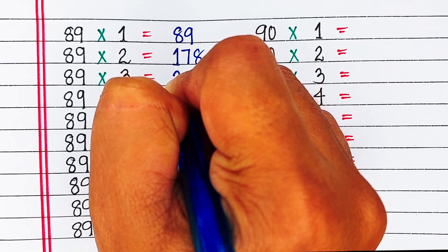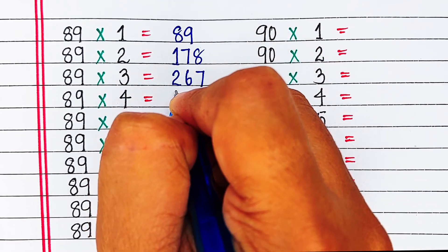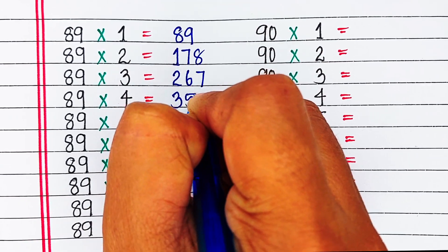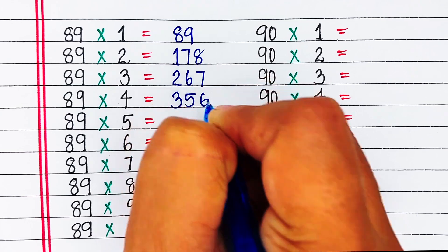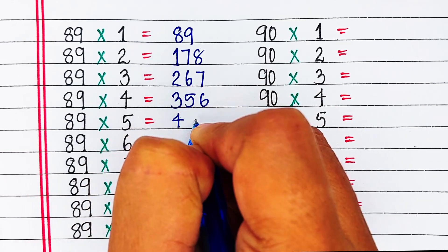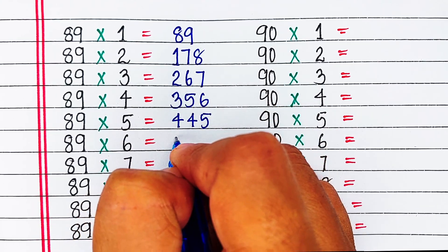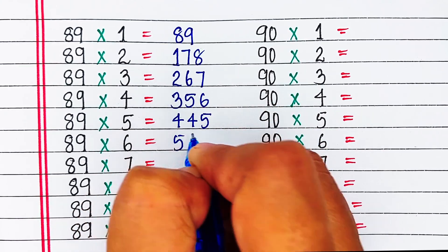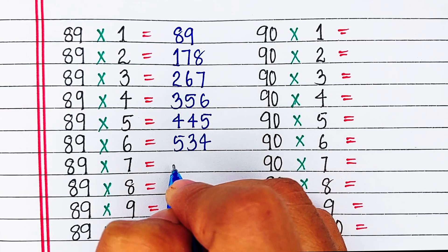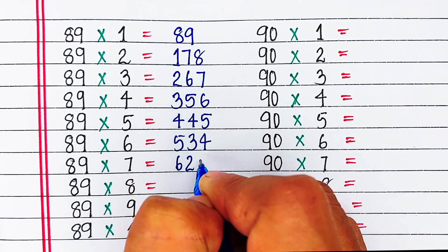89 1s are 89, 89 2s are 178, 89 3s are 267, 89 4s are 356, 89 5s are 445.